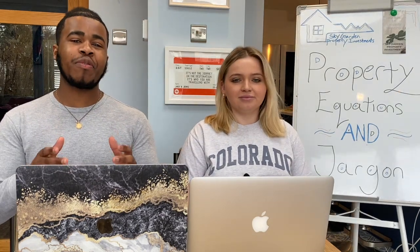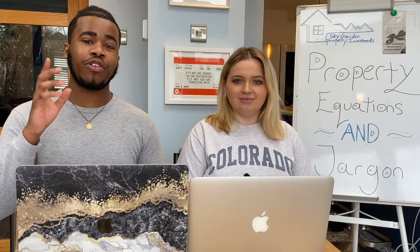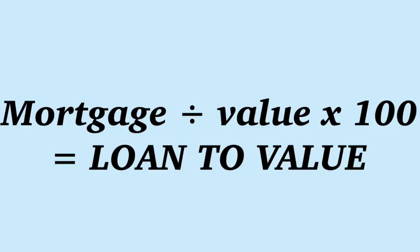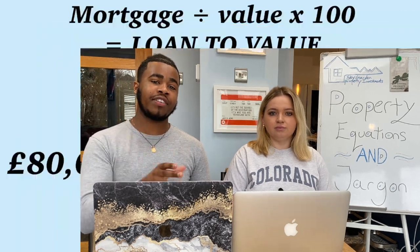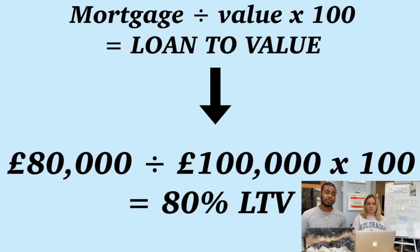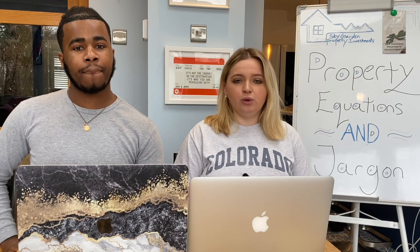Next is LTV, which is loan-to-value. Simply, all that is is the ratio of a loan to the value of an asset that was purchased. This is a term commonly used by banks and lenders, and you're going to need to know this when obtaining a mortgage. For example, if the value of the property is £100,000 and your deposit is £20,000, you'd have a mortgage of £80,000. Take that mortgage of £80,000, divide it by the value of the property — £100,000 — giving you 0.8, then times by 100, and that's an 80% loan-to-value ratio.